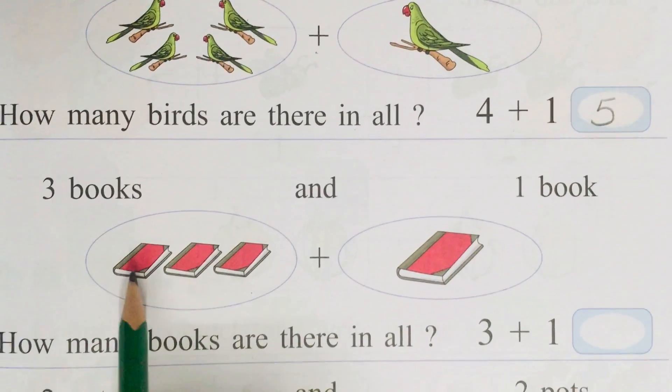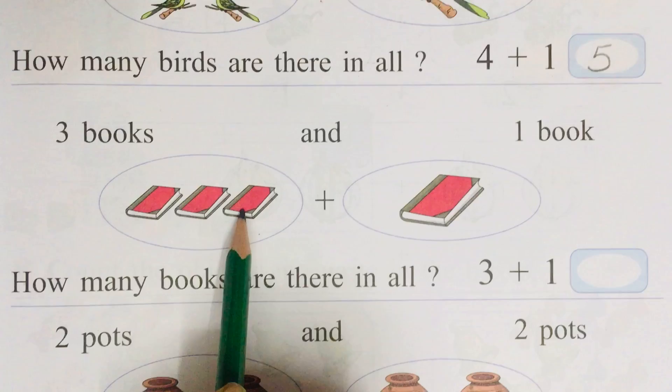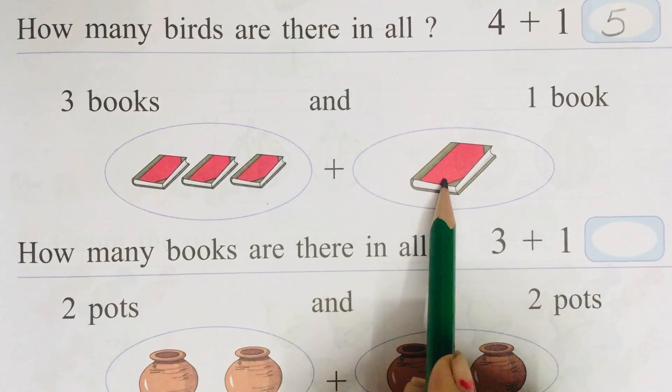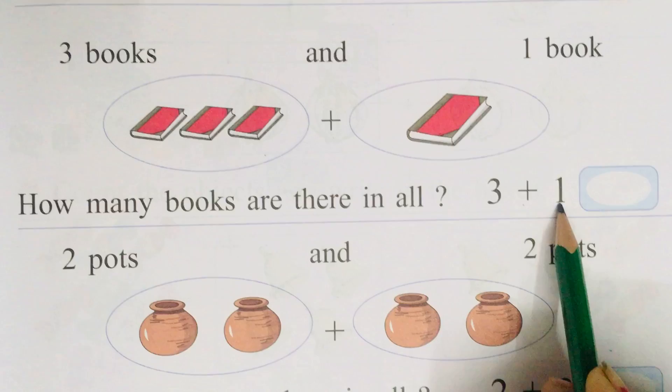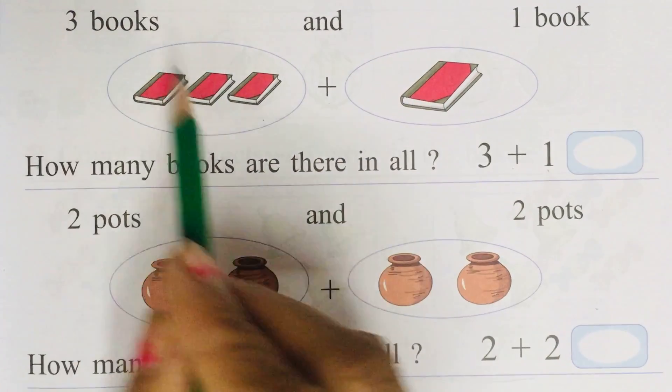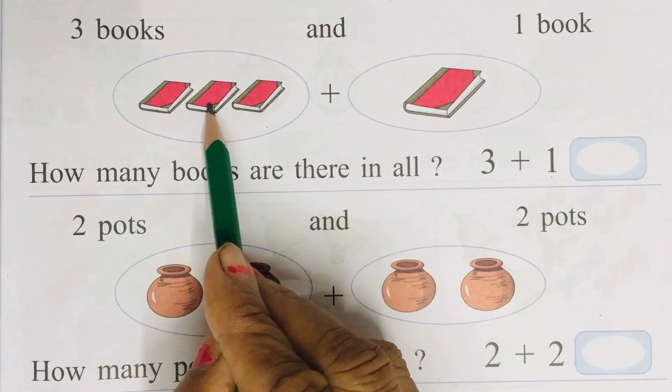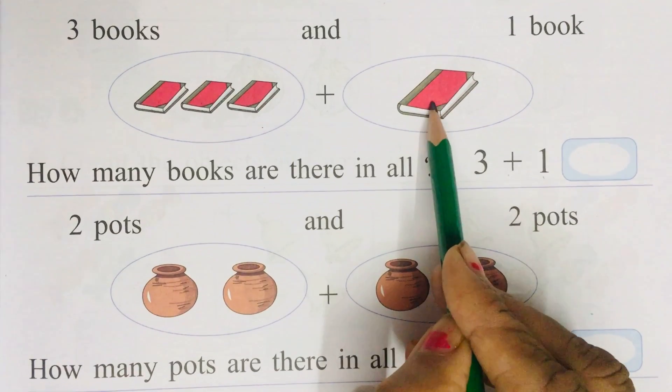Count these books, 1, 2, 3 plus 1. 3 plus 1 is written over here. So count again these books, 1, 2, 3, 4.